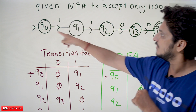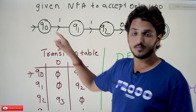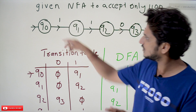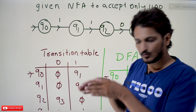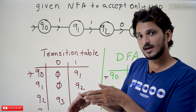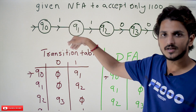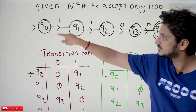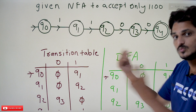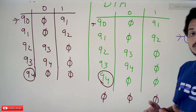Since we have to accept only the string double-one double-zero, if you encounter a 0 at Q0 we are not moving to any state — this NFA is going to die. The same logic we apply in DFA: we are moving to the dead state. This intuition was provided when we discussed the NFA examples class. That's why we are considering the same example here.